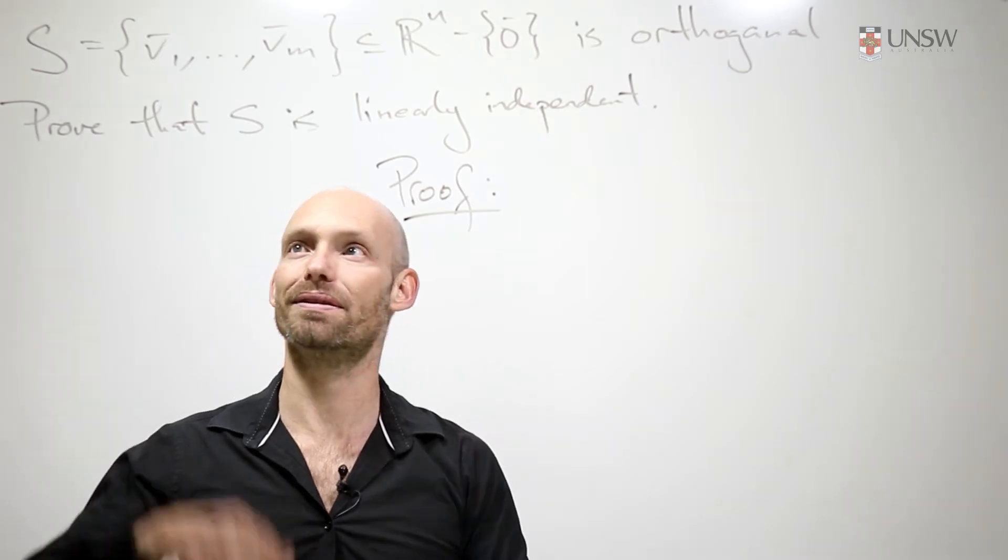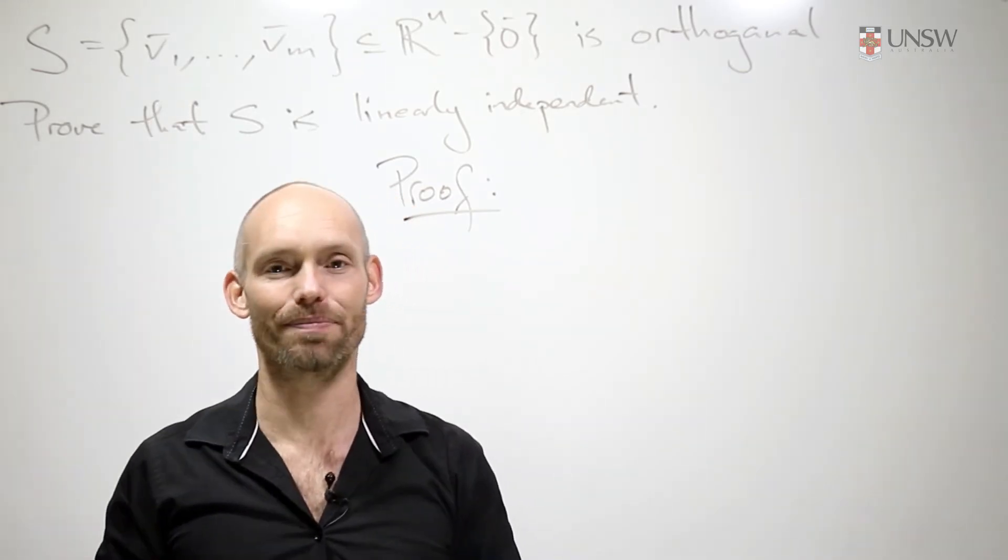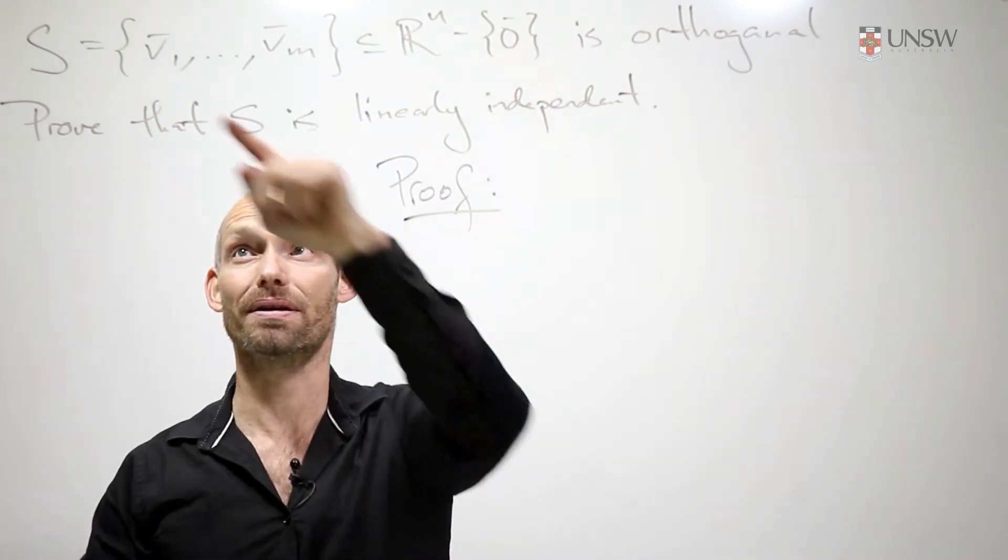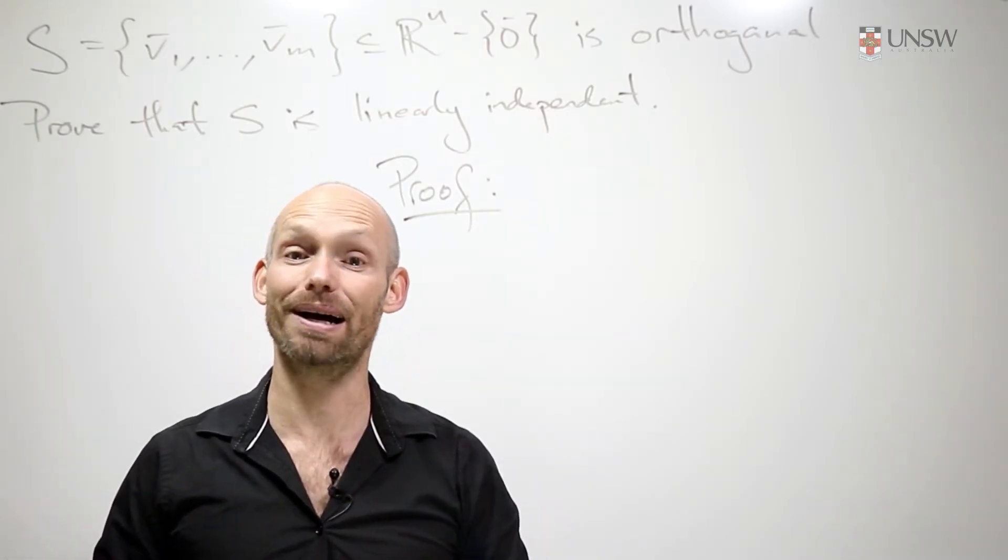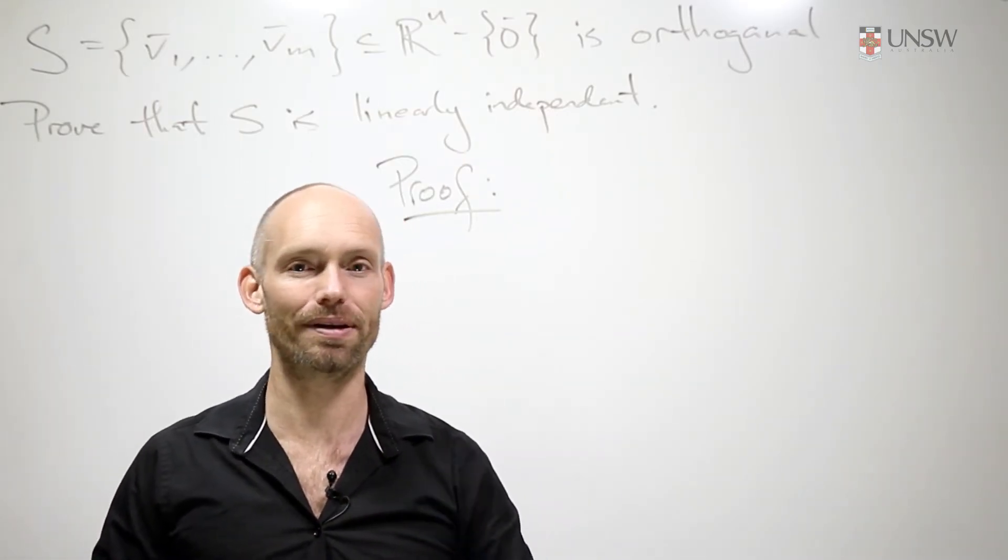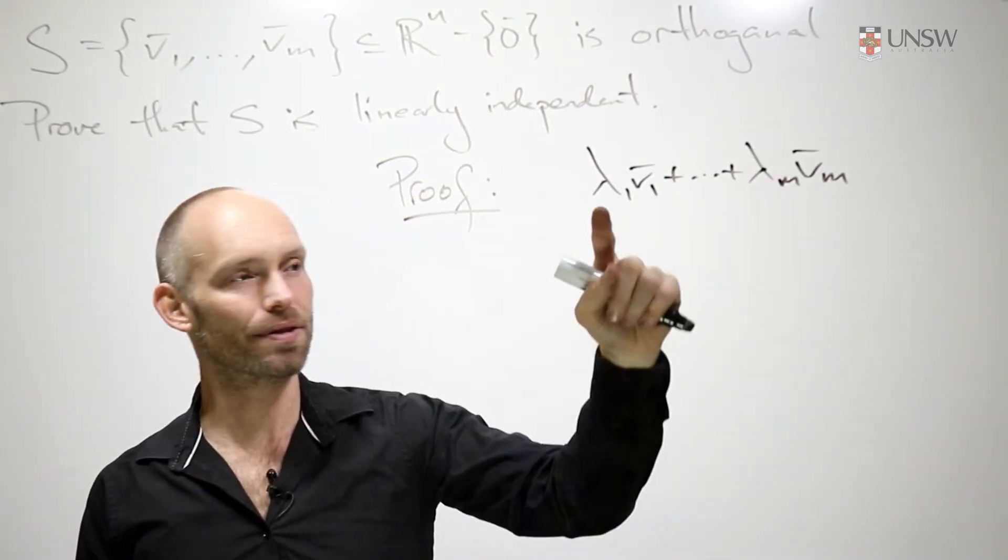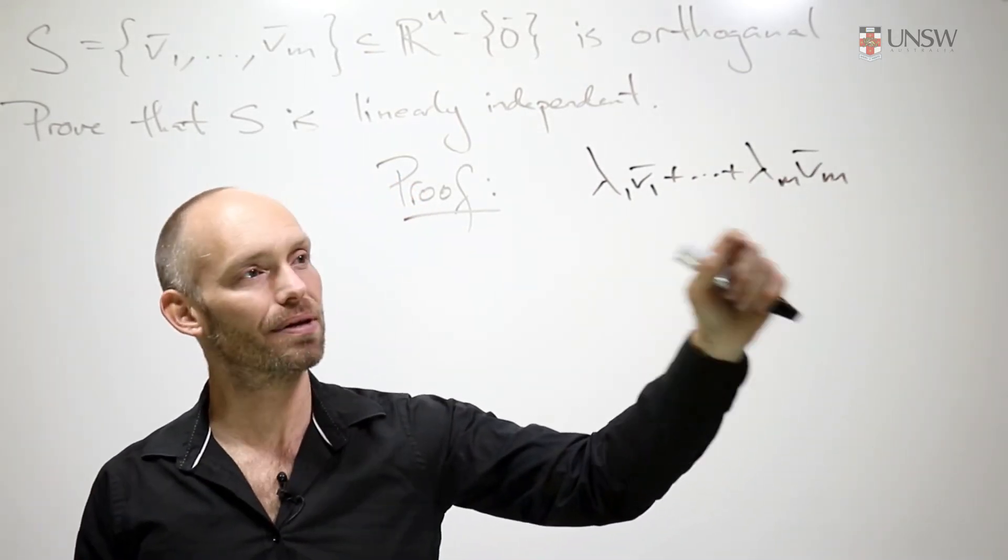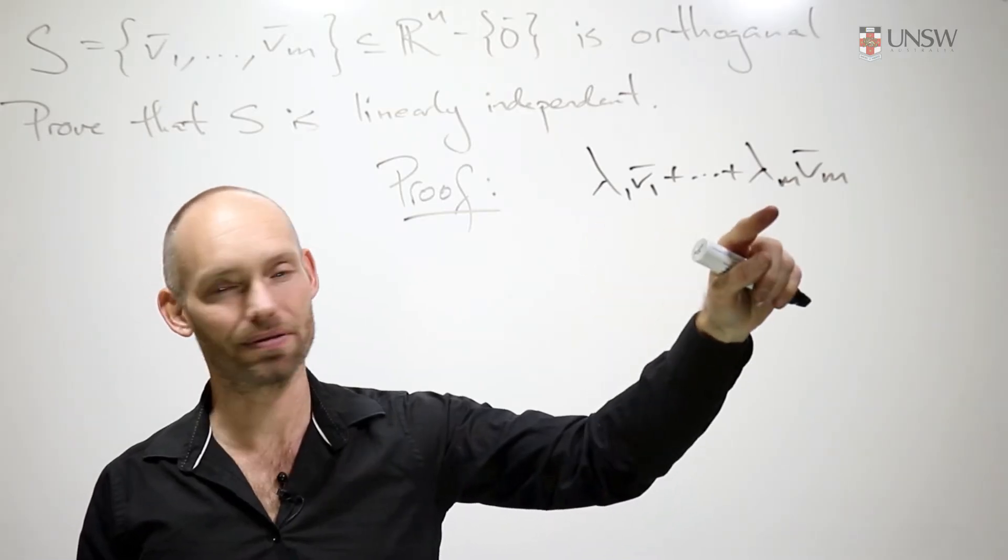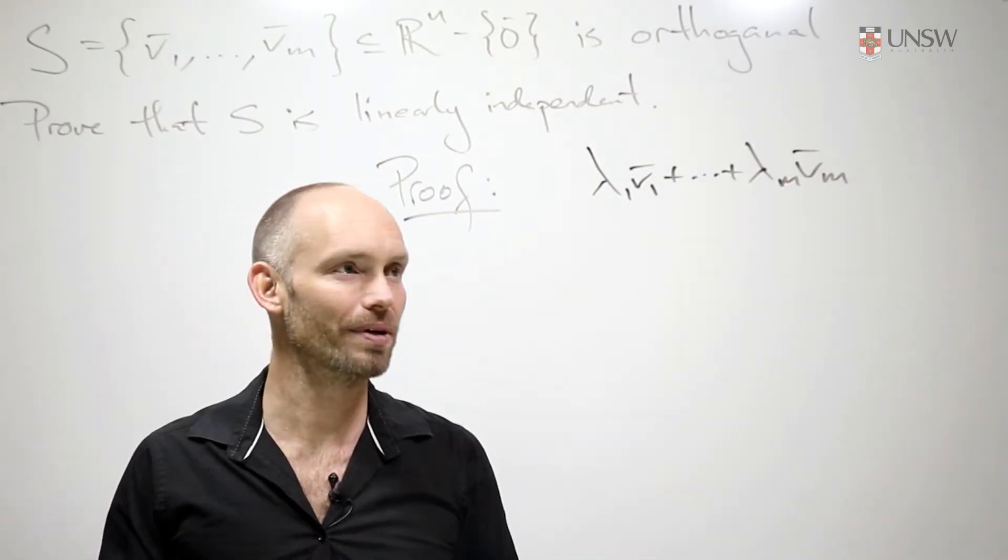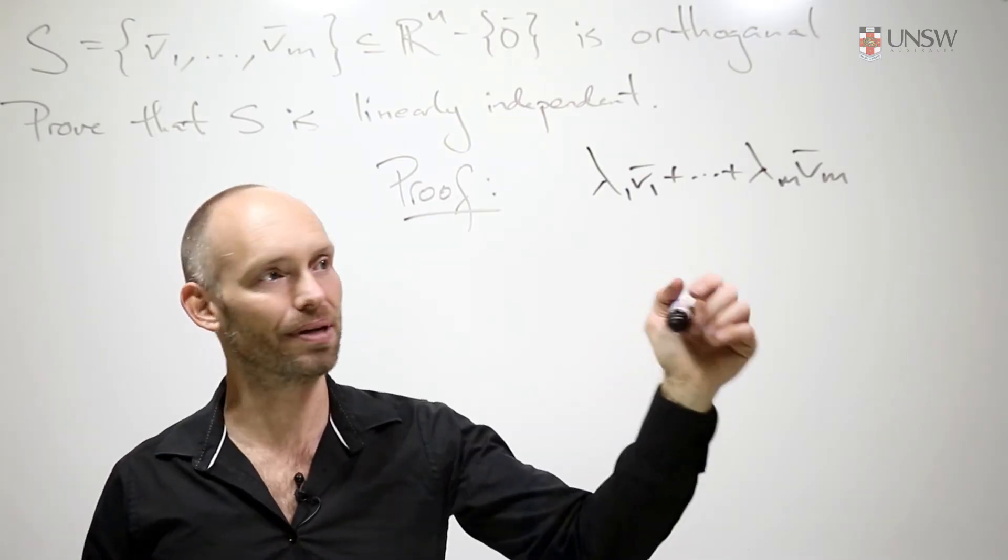Now, there's a standard way to prove that vectors are linearly independent, and that's by looking at an arbitrary linear combination of them, like this. So there's a linear combination of these vectors, where λ1, λ2, up to λm are some real numbers. We don't know what they are, but they're just real numbers.